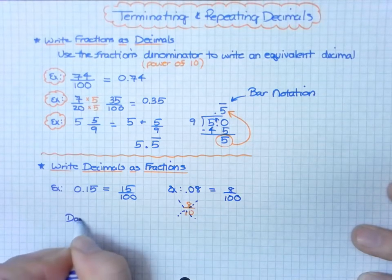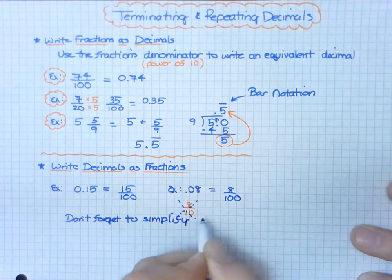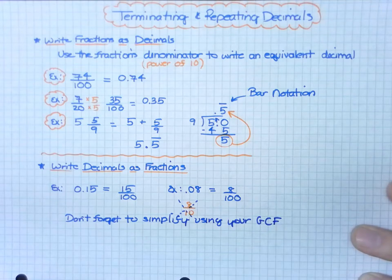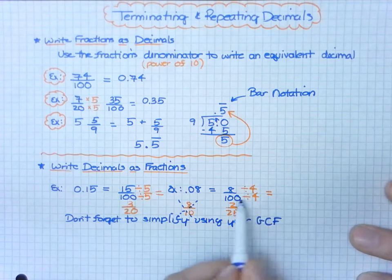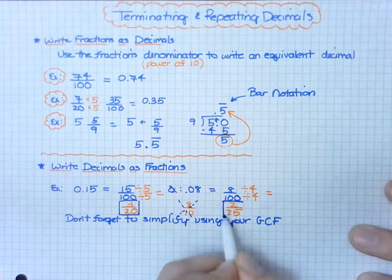Don't forget to simplify using your GCF. I can divide by 5 as the greatest common factor for 15/100 to get 3/20, and divide by 4 for 8/100 to get 2/25.